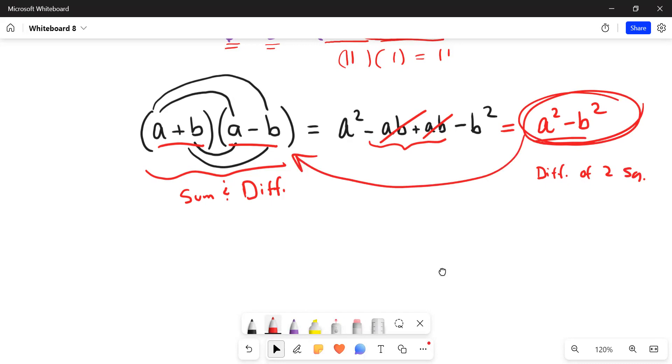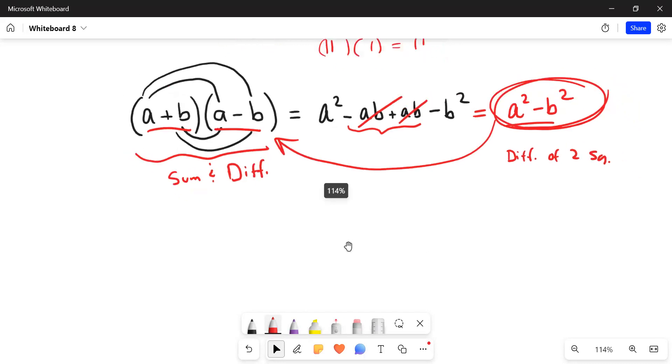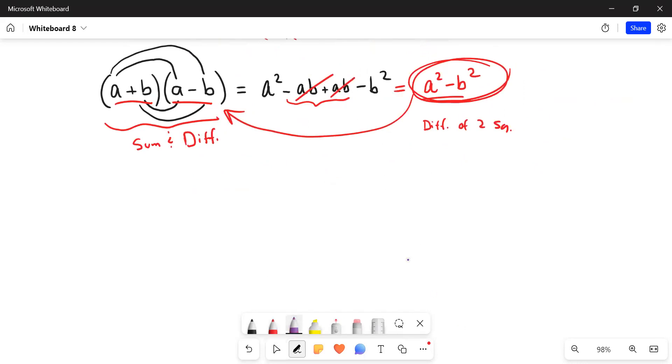Let's take a look at two examples to demonstrate that. First one, let's say you're asked to factor a polynomial with just two terms, 25x squared minus 49.